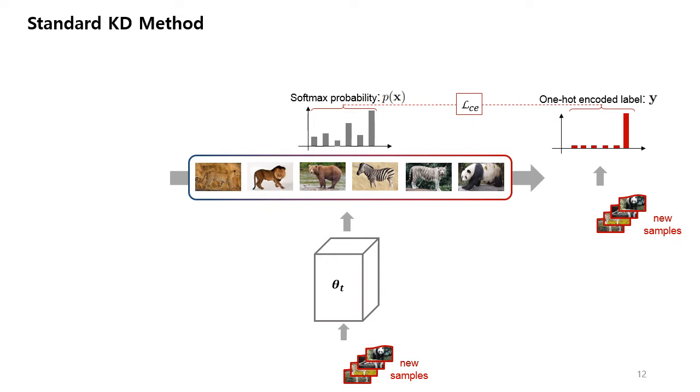In order to mitigate this catastrophic forgetting problem, many works have been studied. Among them, one of the most common strategies is what we call standard KD method. In the standard KD method, there are two components.